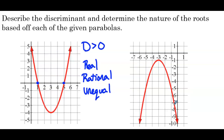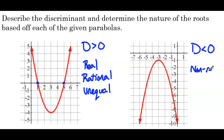In the second example, the parabola never hits the x-axis, so there are no x-intercepts. That means the discriminant is less than 0, and we describe the roots as non-real or imaginary — a topic that's very interesting but beyond the scope of this course.